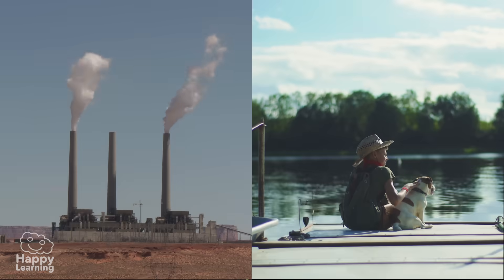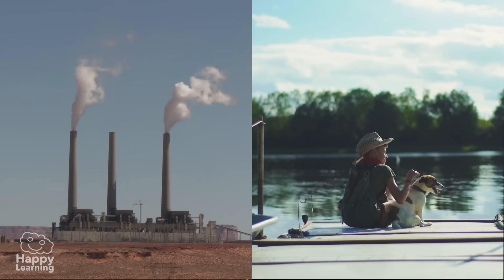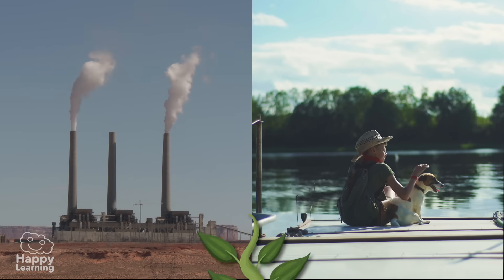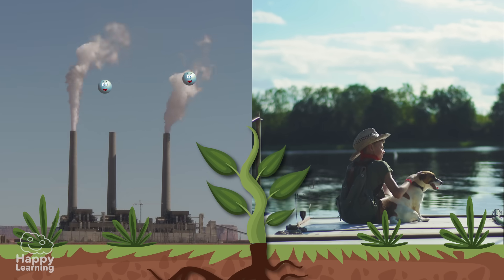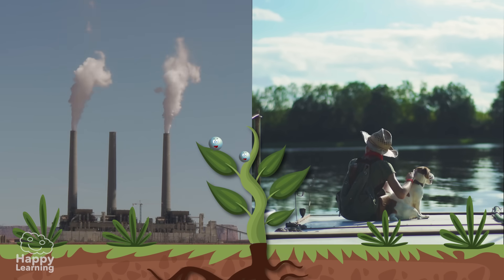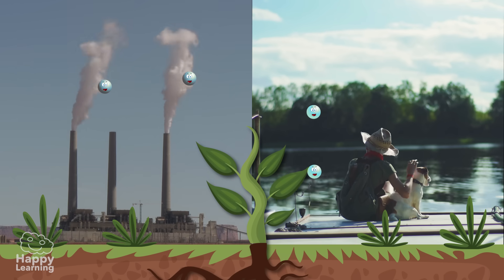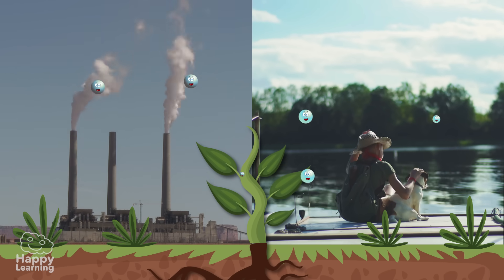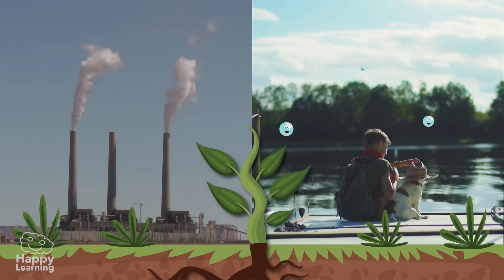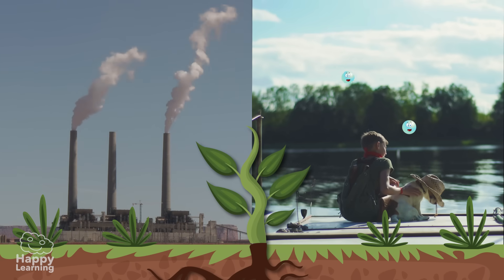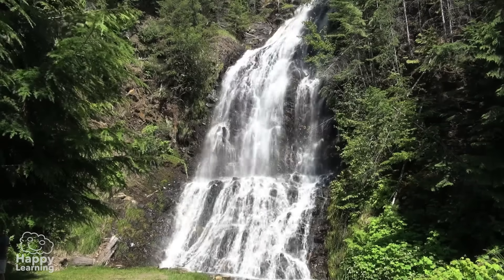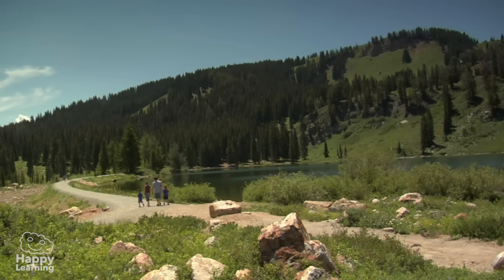And one last thing so you understand the importance of photosynthesis. When plants absorb dirty and contaminated gases, they transform them into pure air, into oxygen. And this way they clean the atmosphere and all nature.